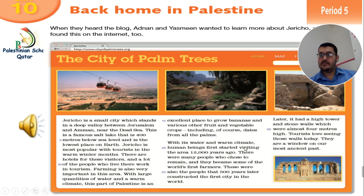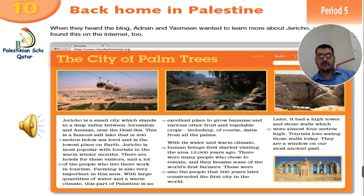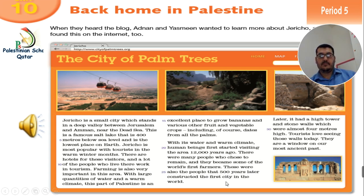With its water and warm climate, human beings first started visiting the area 12,000 years ago. There were many people who chose to remain and they became some of the world's first farmers. These were also the people that 500 years later constructed the first city in the world. Later, it had a high tower and stone walls which were almost four meters high. Tourists love seeing those walls today. They are a window on our most ancient past.